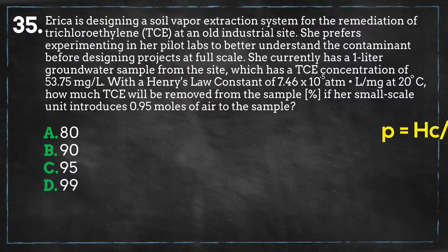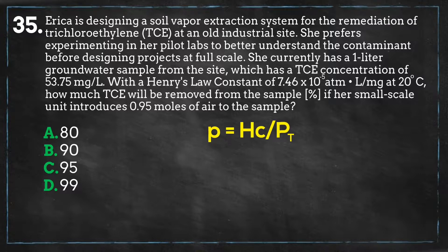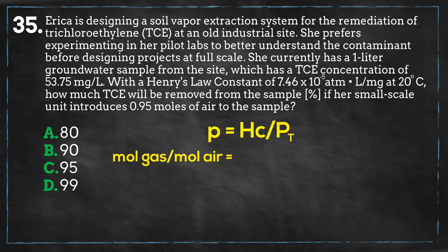The equation describing Henry's law is the following, where P equals the mole fraction of gas in air, H is Henry's law constant, C is the concentration of gas in water, and P sub T is the total pressure, usually in atmospheres. The variable P will always be in moles of gas per mole of air, and the units for the variable C will always be dependent on the units of Henry's constant, and vice versa.